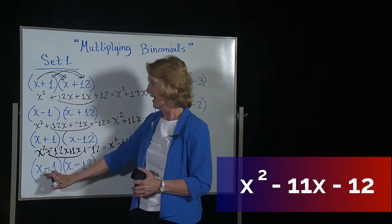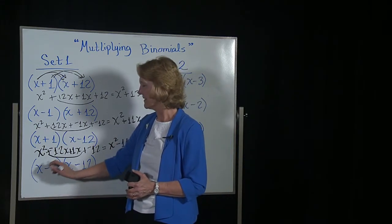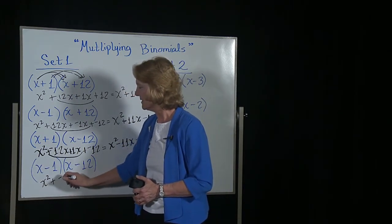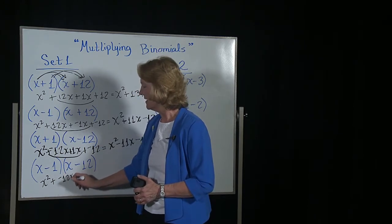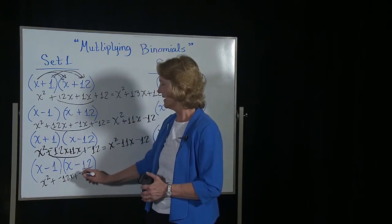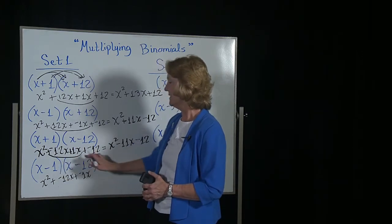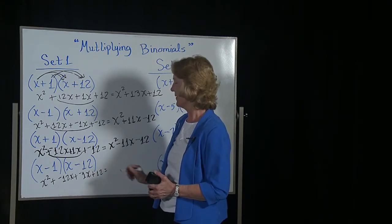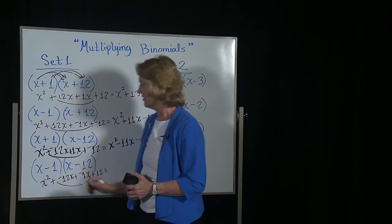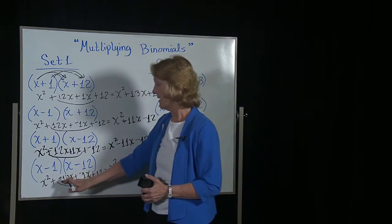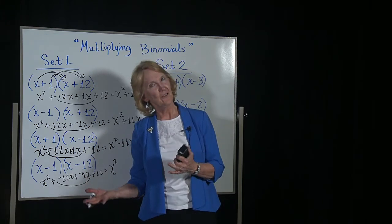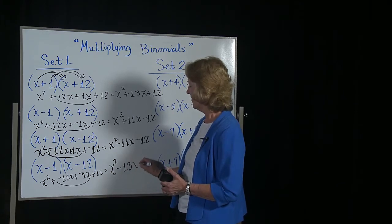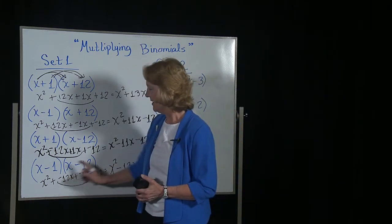Next one. x minus 1 times x minus 12. x times x is x squared. x times minus 12 is negative 12x. Negative 1 times x is negative 1x. Negative 1 times a negative 12 becomes positive, so plus 12. Combine like terms. You're going to get x squared. A negative 12 and a negative 1, if you were in debt $12 and you went in debt one more dollar, you'd be in debt $13. So minus 13x and then plus 12.